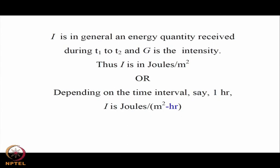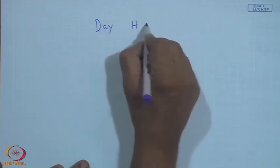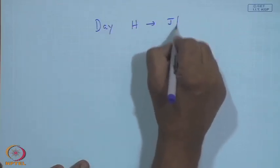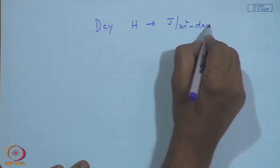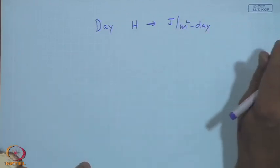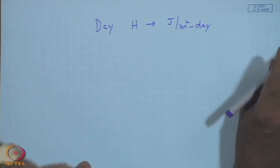That is exactly why the hour is highlighted — it is so many joules per meter square-hour. For an entire day, it is generally indicated by H, in joules per meter square-day. Depending upon the chosen time period, I put that hyphen with a clear understanding. I cannot multiply by the number of days or hours to get a total; I have to sum up for different days.